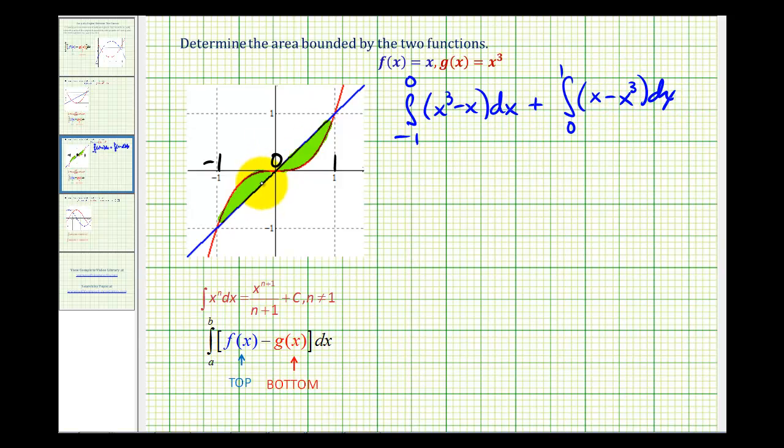Now I do want to mention that for this example, these two regions do have the same area because of the symmetry. So we could just take twice one of these integrals. But it's not always going to be the case where these two regions would have the exact same area. So I'm going to go ahead and show this using both definite integrals.